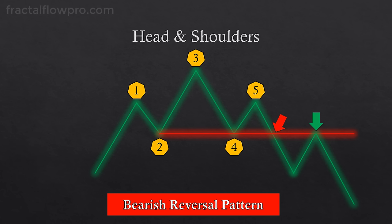Another detail about the head and shoulders pattern is that the neckline might not always be horizontal. Sometimes it can be sloped to the upside or sloped to the downside. You have to be careful when that happens because you want to put your stop-loss order above highs that confirm the power of sellers, meaning highs that precede lower lows.